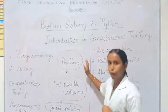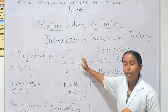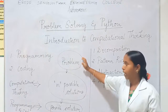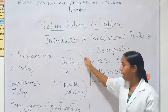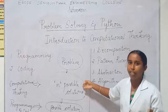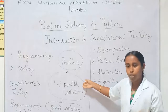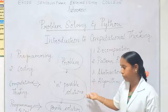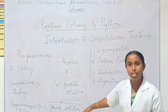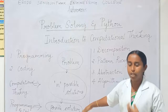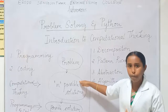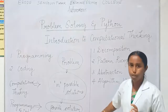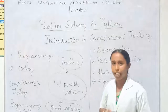For example, if I take a problem like coming to college or riding a vehicle, anything may be a problem and it may have n possible solutions. The vehicle may be a cycle, a motor, a car, a two-wheeler or a four-wheeler — anything may be. And the possible solution is which one is affordable and accessible to me. Among n possible vehicles, whichever is feasible to me is the possible solution in computational thinking.